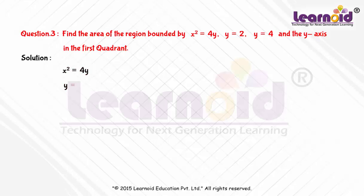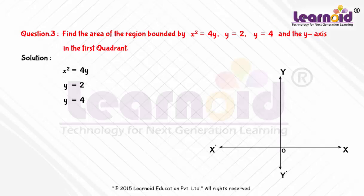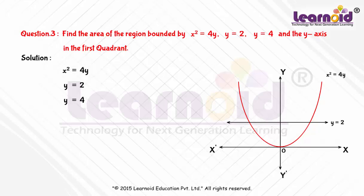Before finding the area of the region, we will first draw a curve and identify the bounded region. The given curve is x² = 4y, which is a parabola facing upward on the y-axis. Now draw y = 2 and y = 4, lines parallel to the x-axis. So the bounded region is ABCD.